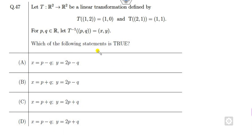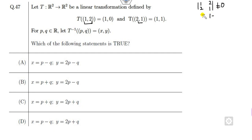Look at the next question. There are many methods, but there is no need to write a linear combination. First, look at the two vectors. Check what the determinant is — it is non-zero. It means the mapping T is one-to-one. Once it is one-to-one, it is also onto, so the mapping is bijective. Once it is bijective, you can express the terms using T inverse.